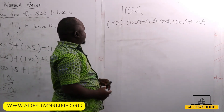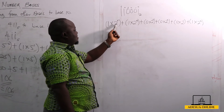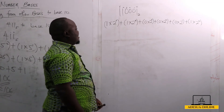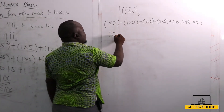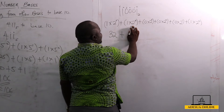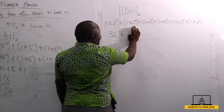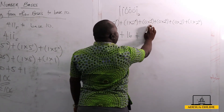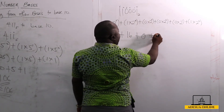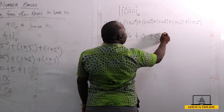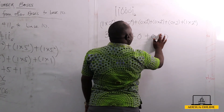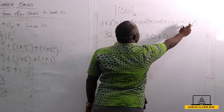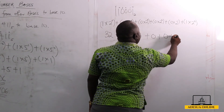2 raised to the power 5 is 2 times 2 times 2 times 2 times 2, which equals 32, so that term is 32. 2 raised to the power 4 is 16, so 1 times 16 is 16. Any number times 0 is 0, so the middle three terms — 0 times 8, 0 times 4, and 0 times 2 — all equal 0. And 2 raised to the power 0 is 1, so 1 times 1 is 1.